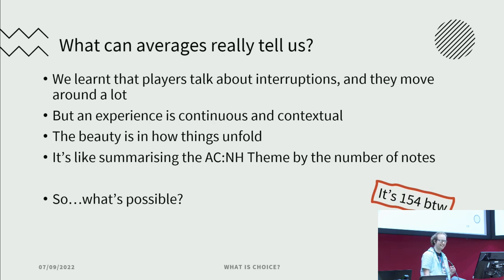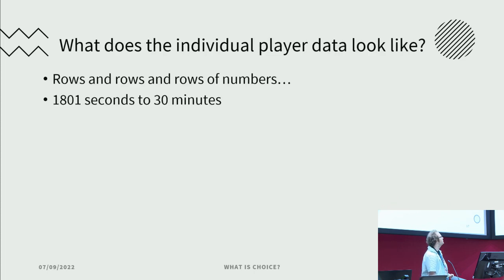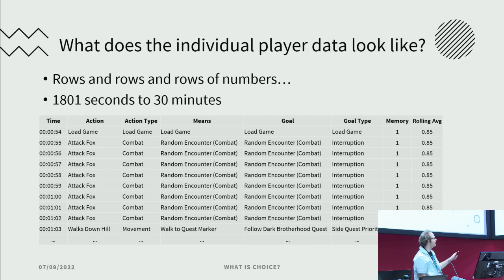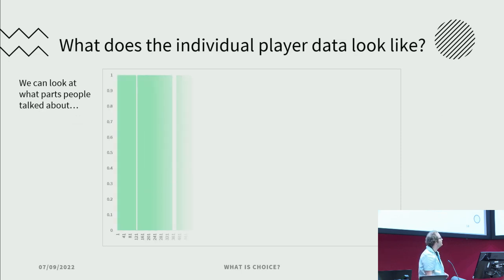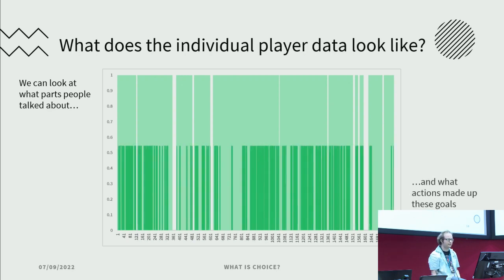So what does individual player data look like? There are rows and rows of numbers — 1,000ms per second, 30 minutes of data. Essentially we have the timestamp, actions, action duration, means, goals, goal type, memory — which is a binary yes/no of whether they talked about it — and a rolling average over a 60-second window of how much is recalled out of 100%. Having this data is really cool because we can look at what a single person remembered. We can see this person remembered quite a lot, but there are some interesting gaps — what happened there? We can overlay this with actions on the same binary to see what I call a barcode analysis — patent pending.